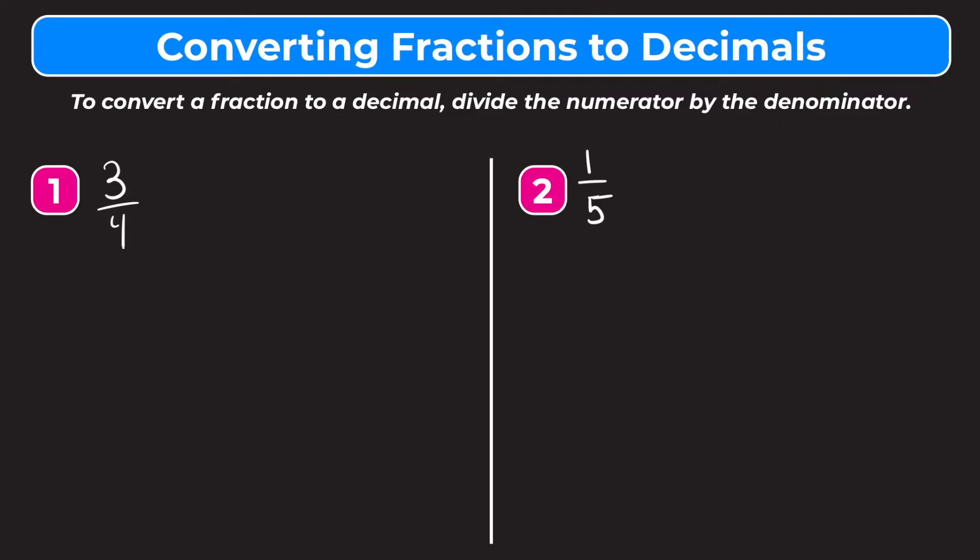Let's start with number one. We have three-fourths. To convert three-fourths into a decimal we have to divide the numerator by the denominator. The numerator is three, divided by the denominator of four. Let's write that out as a long division problem — we put our long division bar, put the three underneath and the four outside.